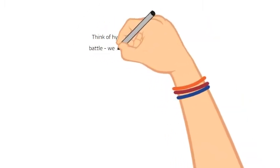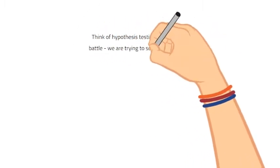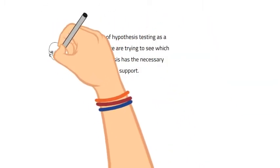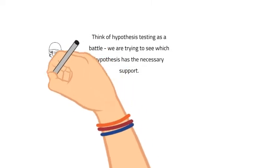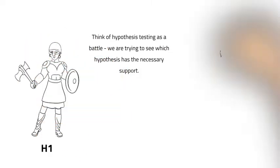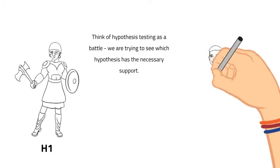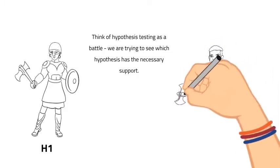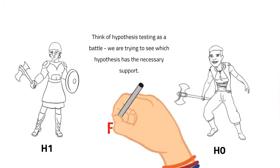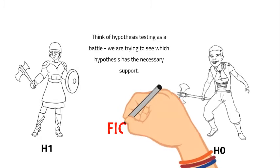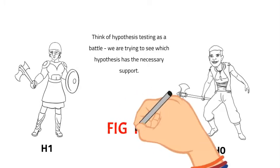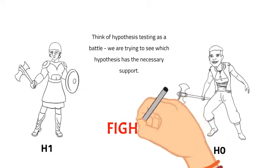You can think of hypothesis testing as a battle. We are trying to see which of our two hypotheses has the necessary support. Do we support H1, the alternative hypothesis that states there is a difference, or is there not enough support for H1 and thus H0, the null hypothesis, is the hypothesis that is supported?